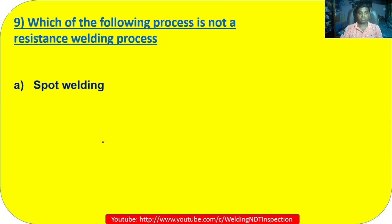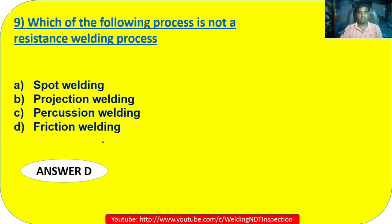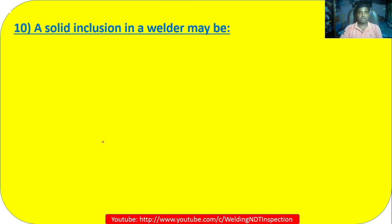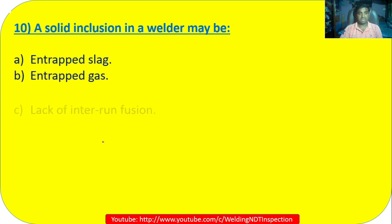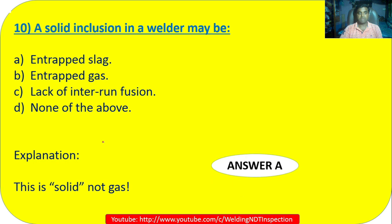Question 9: Which of the following is NOT a resistance welding process? Spot welding, projection welding, seam welding, or friction welding? Friction welding is not a resistance welding process — it is the correct answer. Question 10: A solid inclusion in a weld may be — the answer is slag, since it is solid, not gas. Option A is correct.